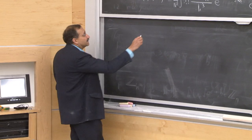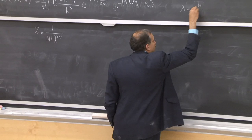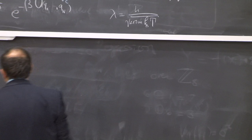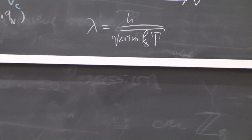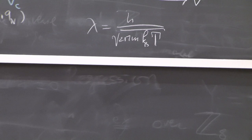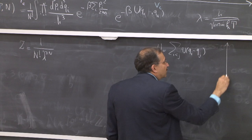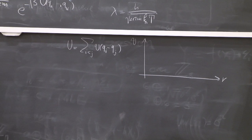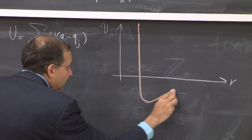I want to calculate this partition function. The part that depends on the momenta gives factors of 1 over lambda, where lambda is h over root(2 pi m kT). Then I have to do the integrations over all coordinates. The potential I'm thinking about is a sum over pairs v(qi - qj), with a typical form that has a hardcore repulsive part and an attractive part.